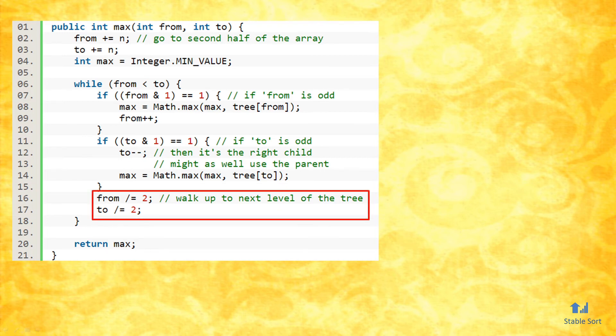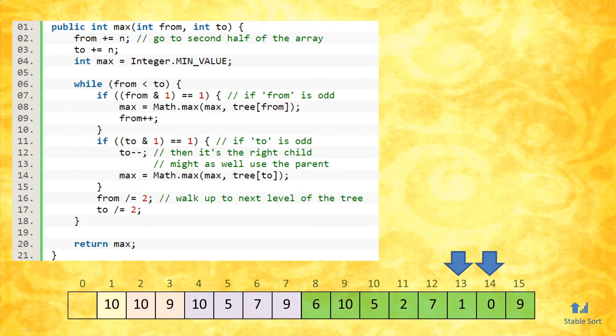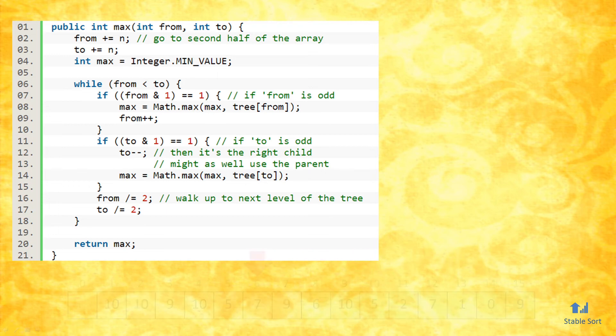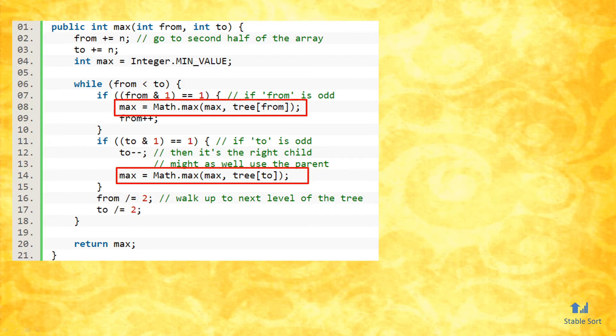On each iteration of the while loop, they are divided by 2, meaning they move towards the left end of the array, or up the tree, if you will. The function terminates once the variable from is no longer less than the variable to. So if the difference between those two variables starts off small, then the loop terminates sooner. For example, if you call this function with parameters 5 and 6, which get shifted to index 13 and 14, then the loop will terminate after the very first iteration. The local variable max starts off as the smallest possible value, this is Java's equivalent of negative infinity, and is reassigned as larger values are encountered.